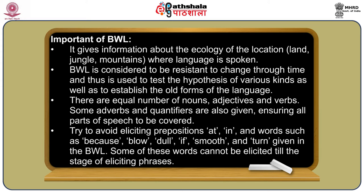Why is the basic word list (BWL) important? First, there are equal numbers of nouns, verbs, and adjectives in the list. Second, it gives information about the ecology or location — for example, words pertaining to land, jungle, mountain are there. Most importantly, the words in the basic word list are those which have been identified as resisting change over time. These words will remain the same whether you are collecting words for historical or synchronic purposes — for example, the verb for 'die' or 'live', or the word for 'tree', 'boy', or 'girl'.